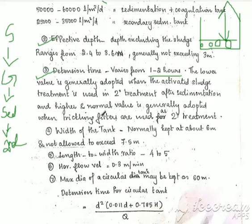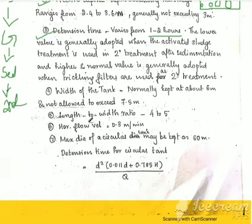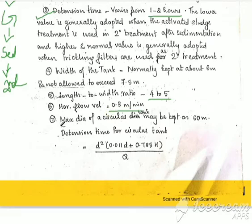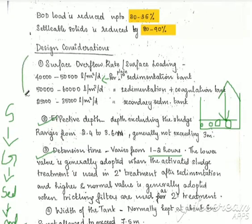In secondary treatment we can also choose a trickling filter. The width of the tank is 6 to 7.5 meters, the length-to-width ratio is 4 to 5, horizontal velocity is 0.3 meters per minute, and the maximum diameter of a circular tank is 60 meters. We have to consider both rectangular and circular shapes and the surface overflow rate for sedimentation tank design.